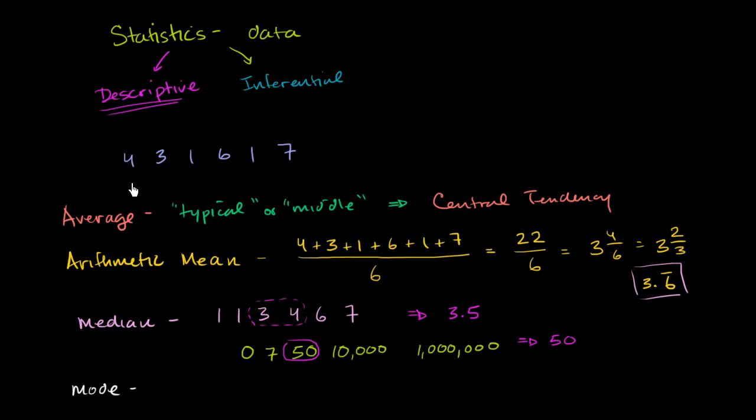But given that definition of the mode, what is the single most common number in our original data set? Well, we only have one 4. We only have one 3. But we have two 1s. We have one 6 and one 7. So the number that shows up the most number of times here is our 1. So the mode, the most typical number, the most common number here is a 1.